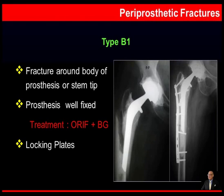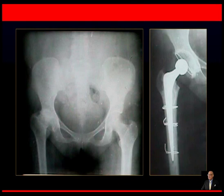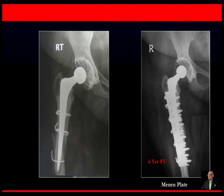For type B1 — a fracture around the body of the prosthesis or stem tip where the prosthesis is well fixed — the treatment is internal fixation with bone grafting. Locking plates have been a big boon in the treatment of these fractures. Here is an example of a patient who underwent cemented total hip arthroplasty; circlage wires indicate an intraoperative periprosthetic fracture. We treated this fracture with the use of menin plates and bone graft, and here is a perfect union and an excellent result at 6-year follow-up.